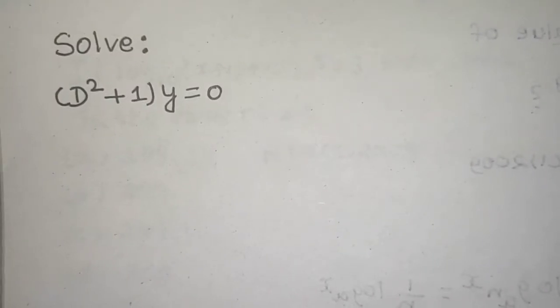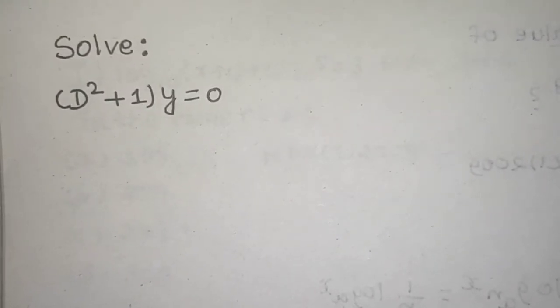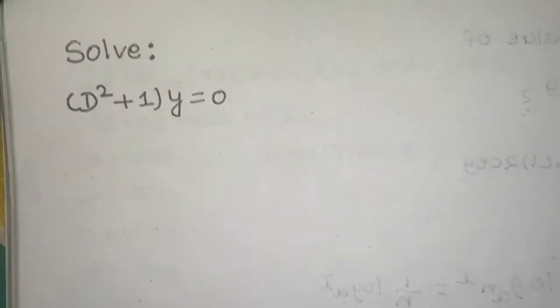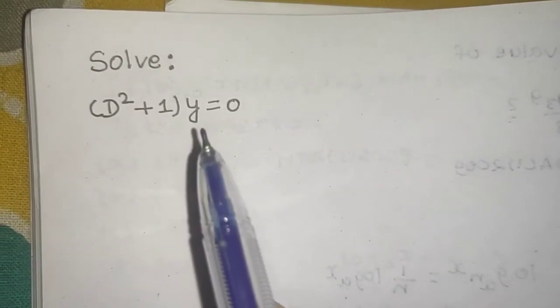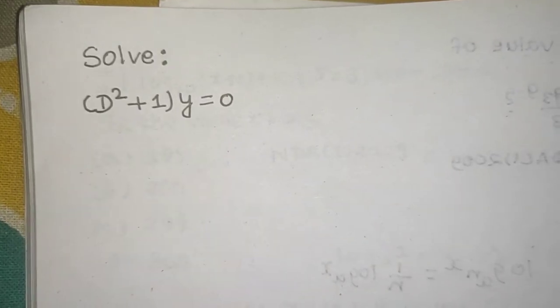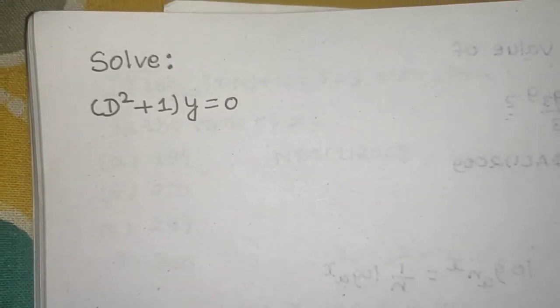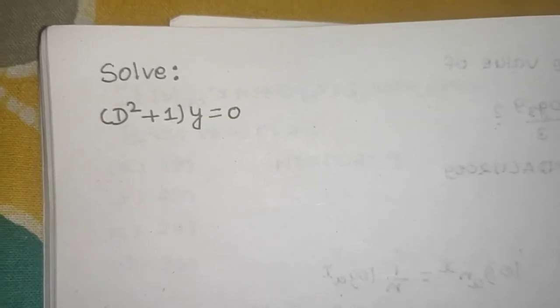See one more question from linear differential equation with constant coefficient. We need to solve D square plus 1 times y equals to 0. What we do in this type of question: first step is to find the complementary function.